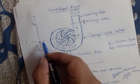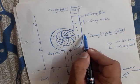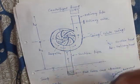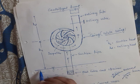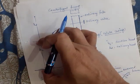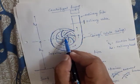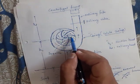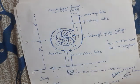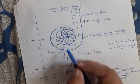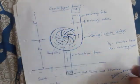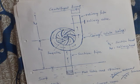The vertical height between the free surface of water in the sump and the centerline of the centrifugal pump is known as the suction head, denoted by Hs. The vertical distance between the centerline of the centrifugal pump and the point of delivery is known as the delivery head.